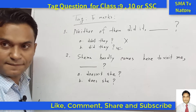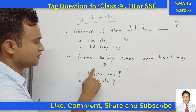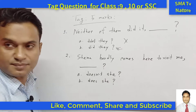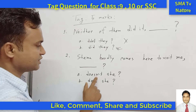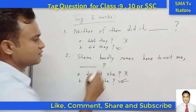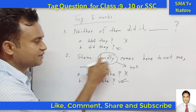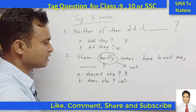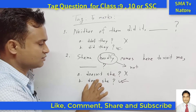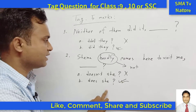Next: 'Shima hardly comes here to visit me' — what is the correct tag, 'doesn't she' or 'does she'? You are saying 'doesn't she' — no, that is not correct. The correct answer is 'does she.' Why? Because 'hardly' already indicates a negative meaning, so we don't need 'not' again in the tag.